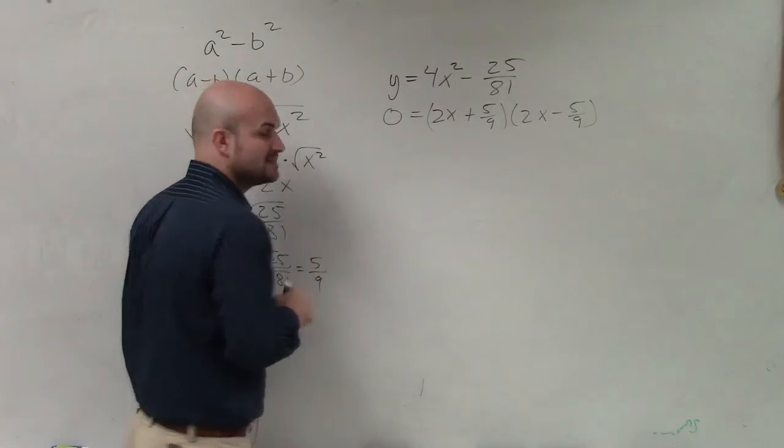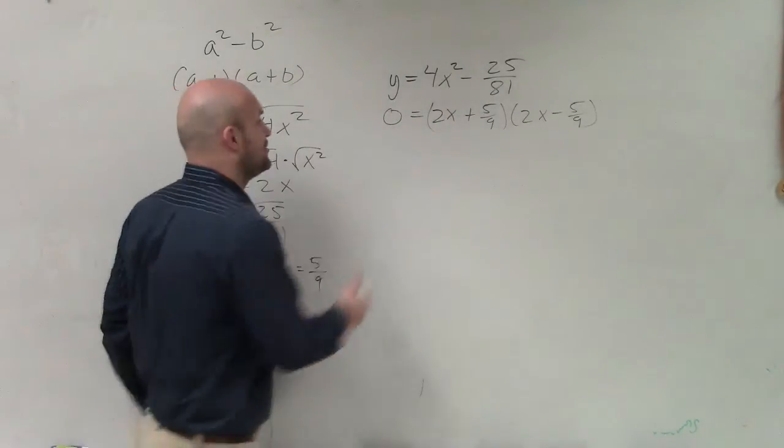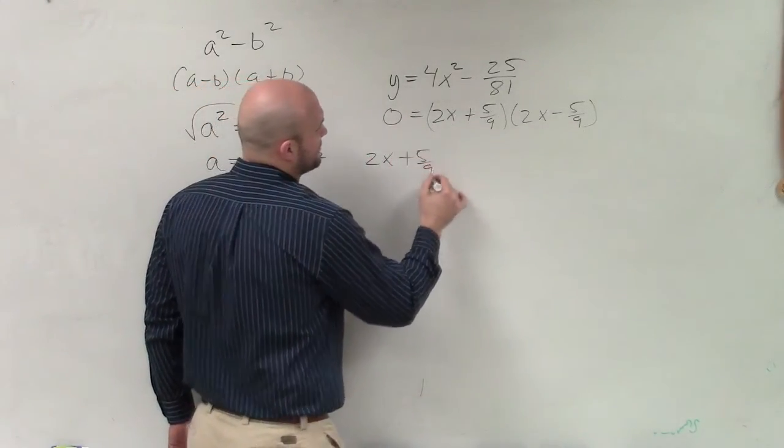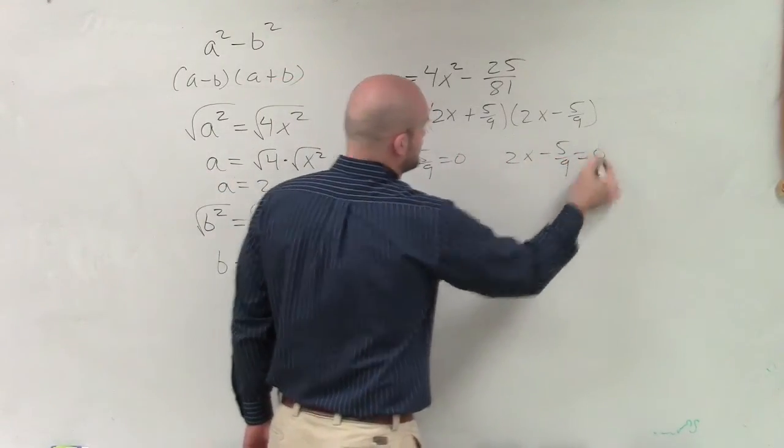Now I can apply the zero product property. Since the product of them is set equal to 0, I can write them both set equal to 0. So that's 2x plus 5 over 9 equals 0, and 2x minus 5 over 9 equals 0.